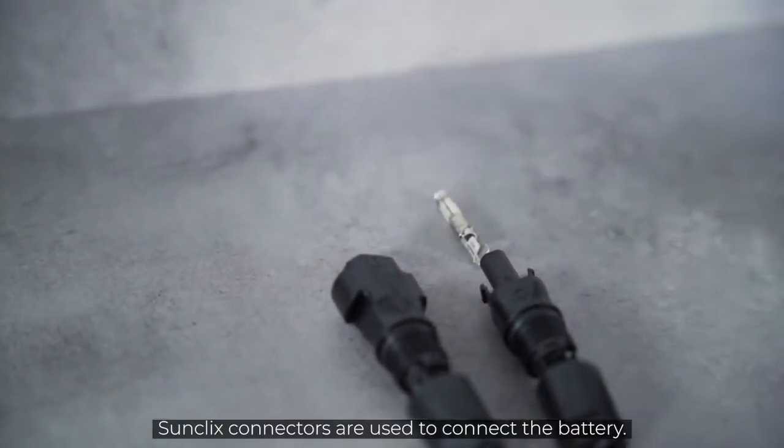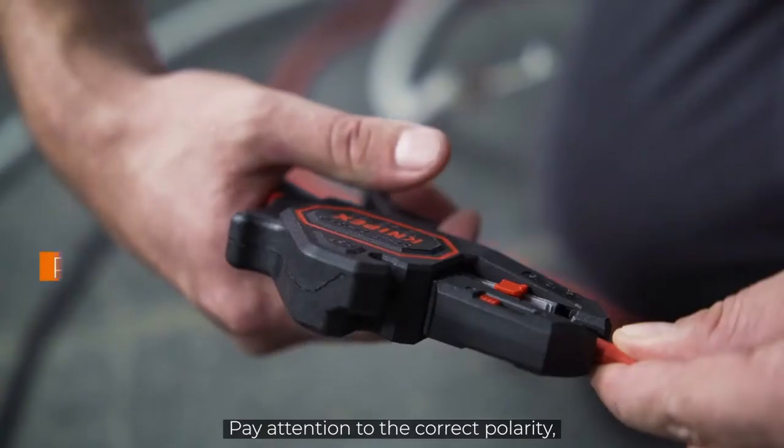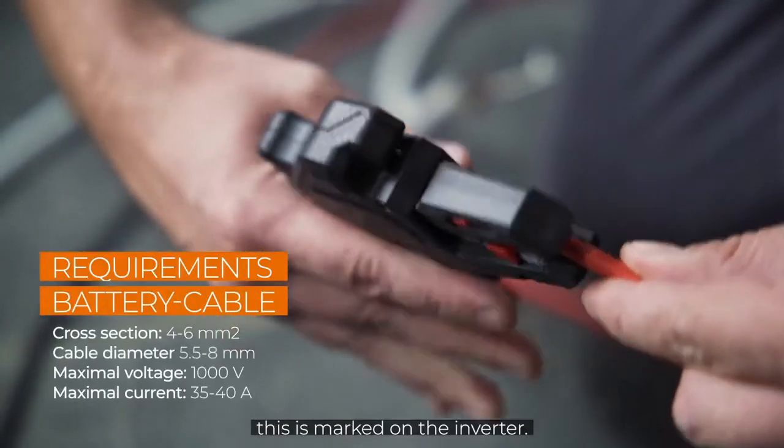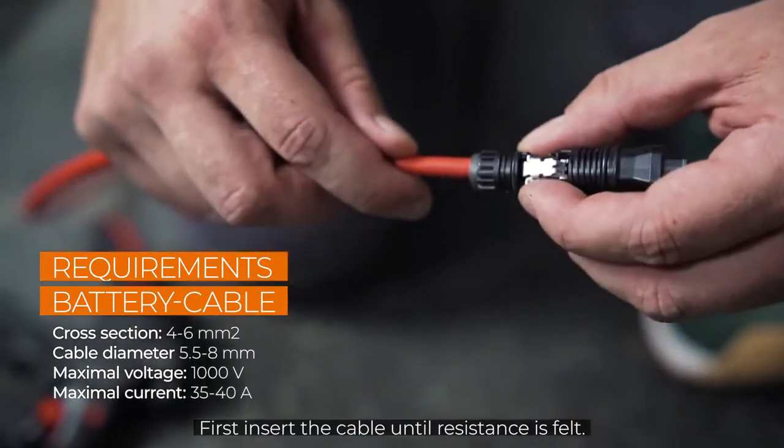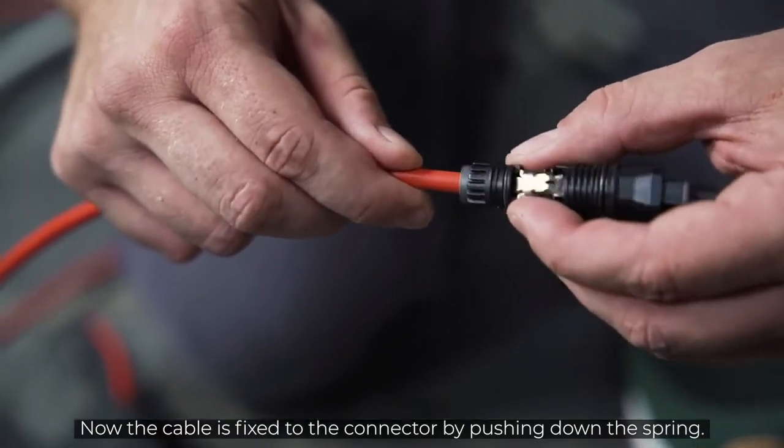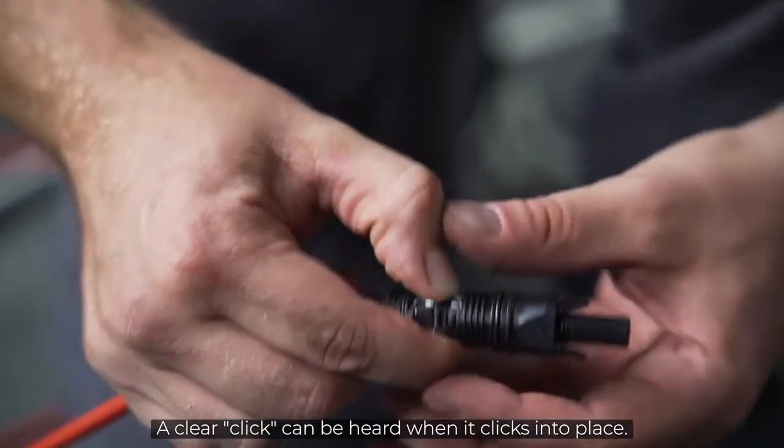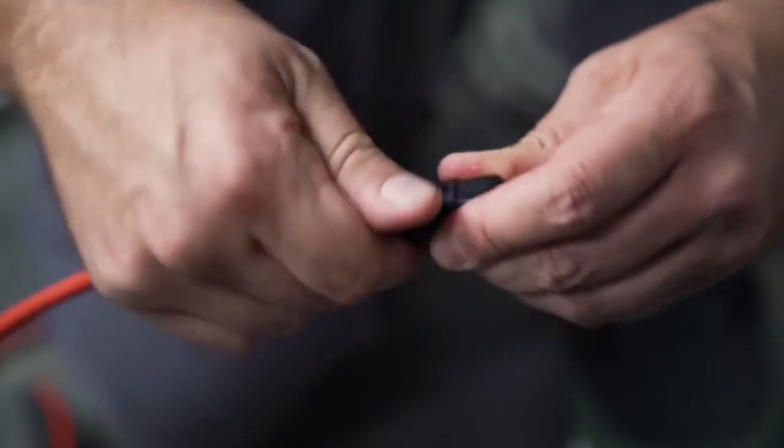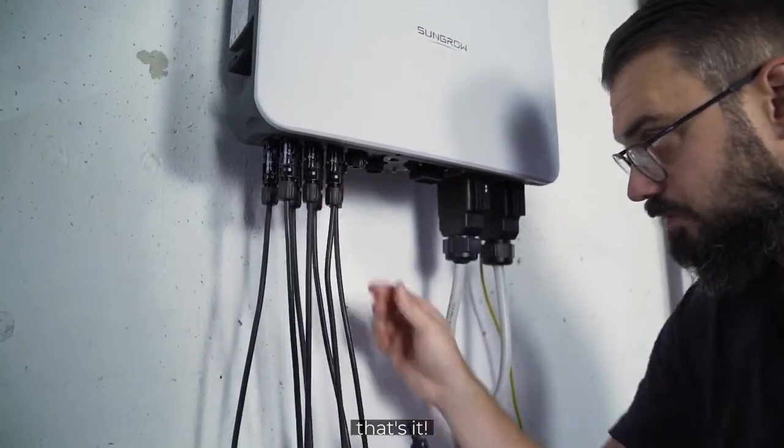SunClix connectors are used to connect the battery. Pay attention to the correct polarity. This is marked on the inverter. First, insert the cable until resistance is felt. Now the cable is fixed to the connector by pushing down the spring. A clear click can be heard when it clicks into place. Tighten the plug. Plug it in. That's it.